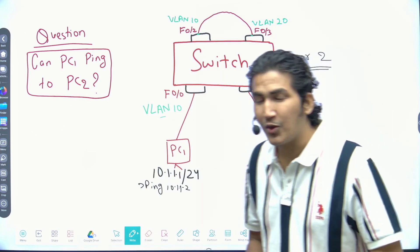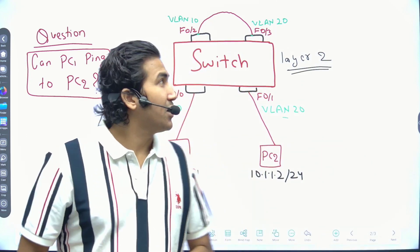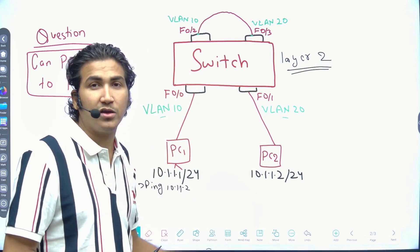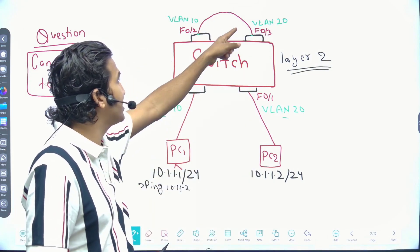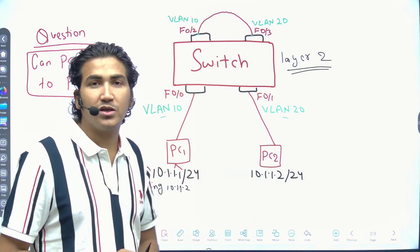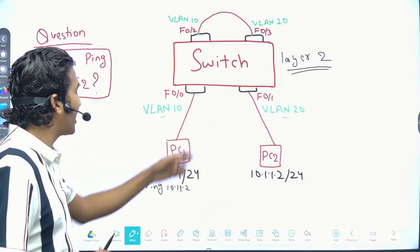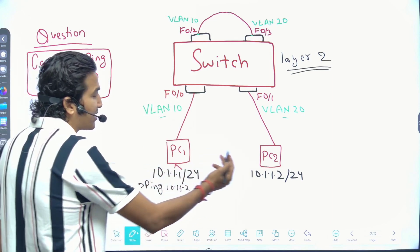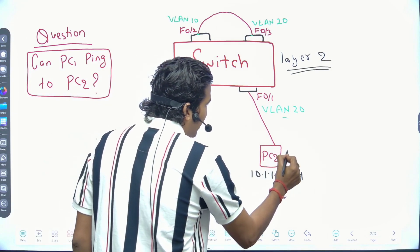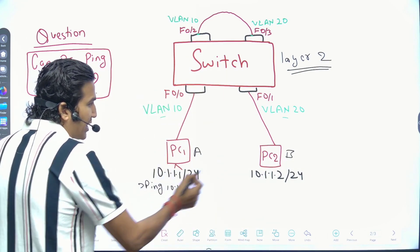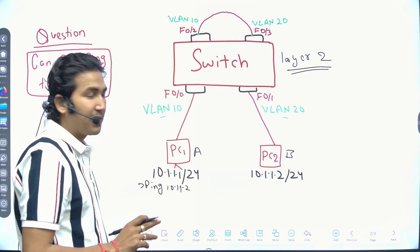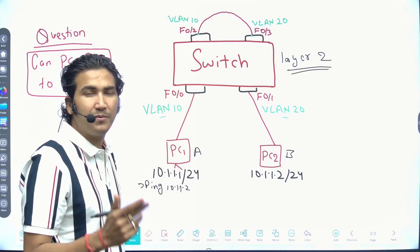If I configure this link as a trunk link, then communication will not happen and ping will not work. Now let's see how communication can happen. Let's say MAC address of PC1 is A and MAC address of PC2 is B. When I ping 10.1.1.2, PC1 needs the MAC address of the destination device and checks the ARP table.